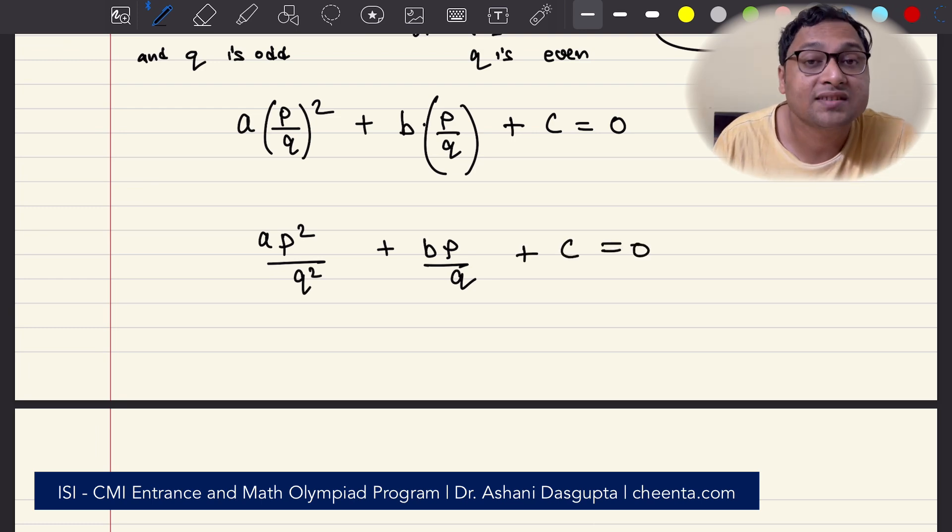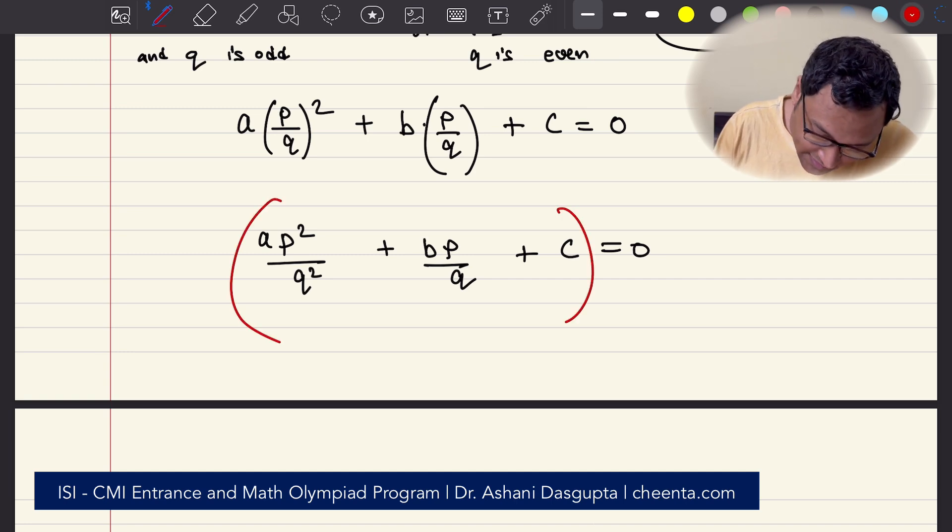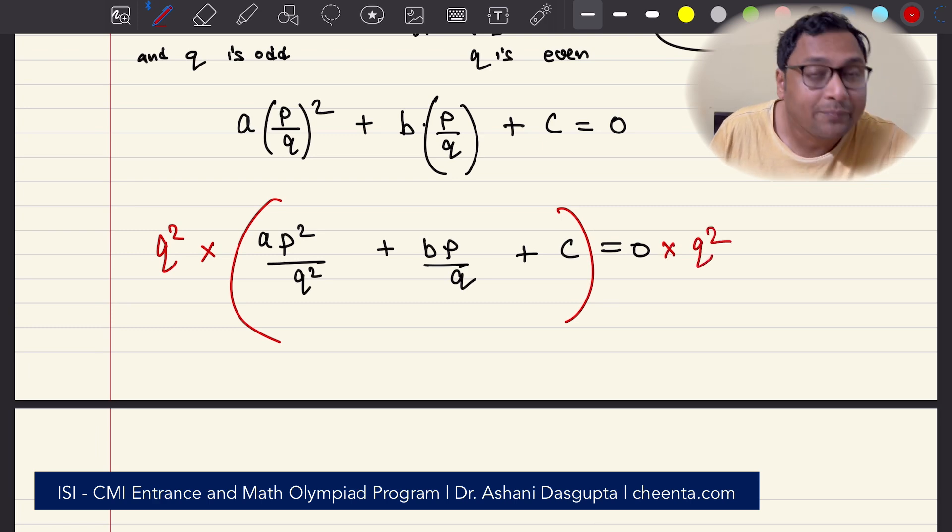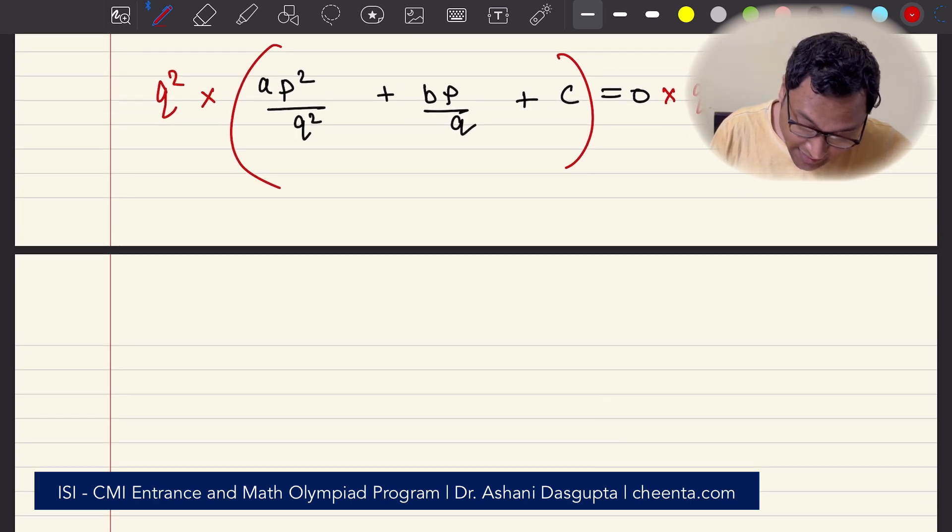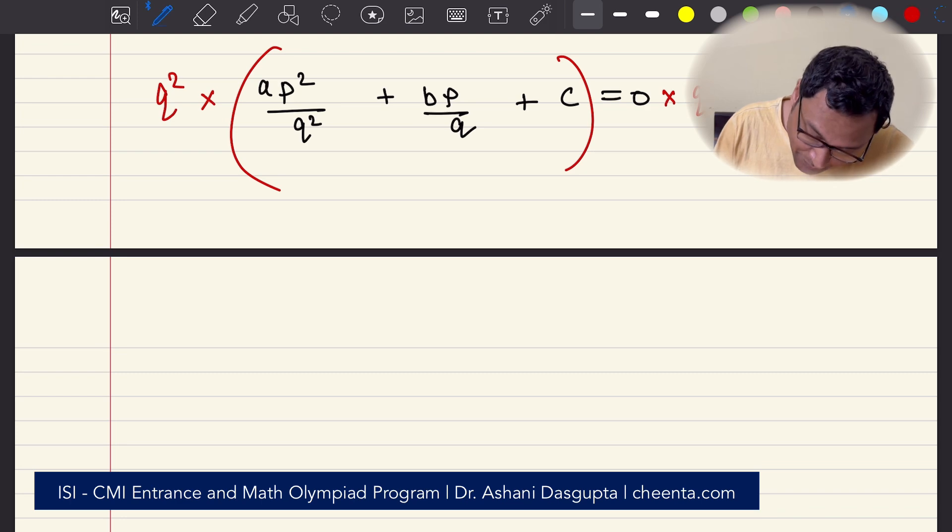Now we can multiply both sides by Q². So if we multiply this by Q², what do I have? I have AP² + BPQ + CQ² = 0.